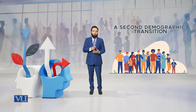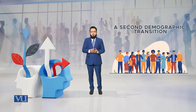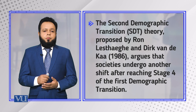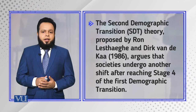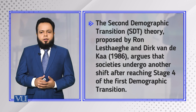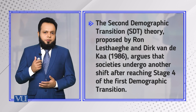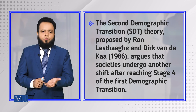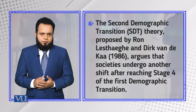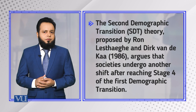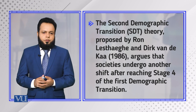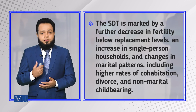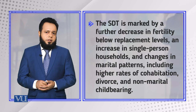In this module we are going to discuss the Second Demographic Transition. The theory was proposed by Ron Lesthaeghe and Dirk Van de Kaa in 1986. They argue that societies undergo another shift after reaching stage four of the First Demographic Transition, which consists of four stages. The Second Demographic Transition is marked by a further decrease in fertility below the replacement level.